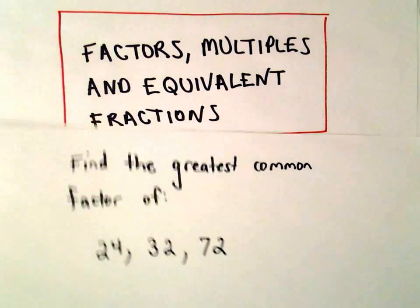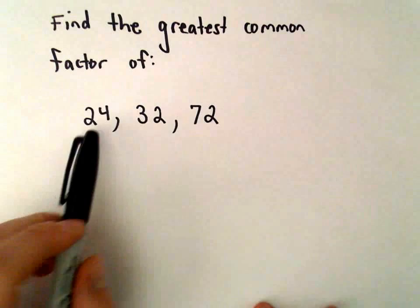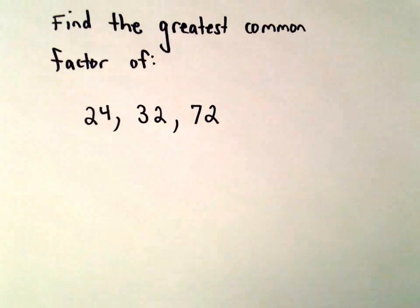Alright, here we're going to look at an example of finding the greatest common factor of 24, 32, and 72.